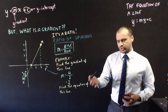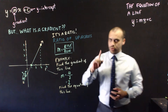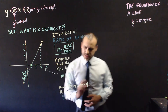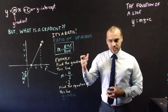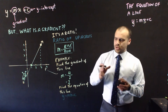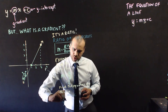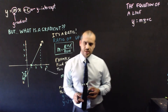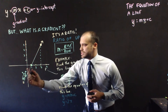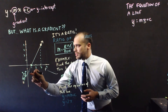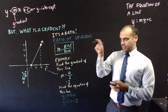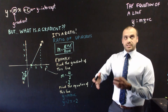Now that I've found the gradient, finding the equation of the line would be easy. We know all straight lines can be written as y equals mx plus c, where m is the gradient and c is the y-intercept. We just figured out the gradient is 2, so y equals 2x. Looking at the y-intercept — that point is negative 2 — so the equation of that line is y equals 2x minus 2.